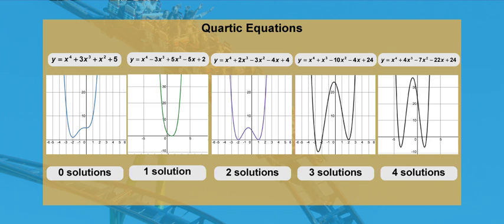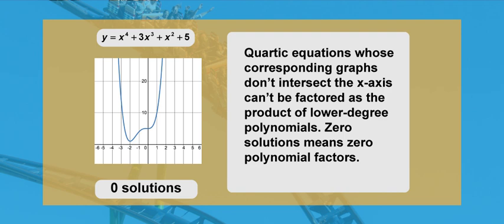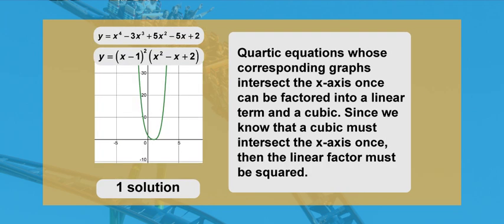Now let's look at polynomial equations of degree four, also called quartic equations. A quartic equation can have zero, one, two, three, or four solutions based on the number of times the graph intersects the x-axis. Quartic equations whose graphs don't intersect the x-axis can't be factored into lower degree polynomials — zero solutions mean zero polynomial factors. Quartic equations whose graphs intersect the x-axis once can be factored into a linear term and a cubic; since a cubic must intersect the x-axis once, the linear factor must be squared, and the resulting quadratic must have a discriminant less than or equal to zero.